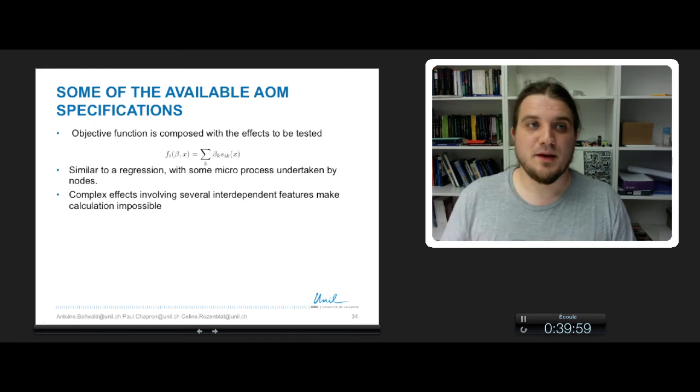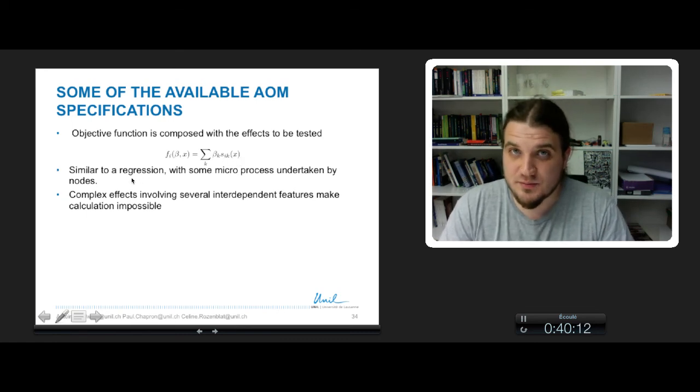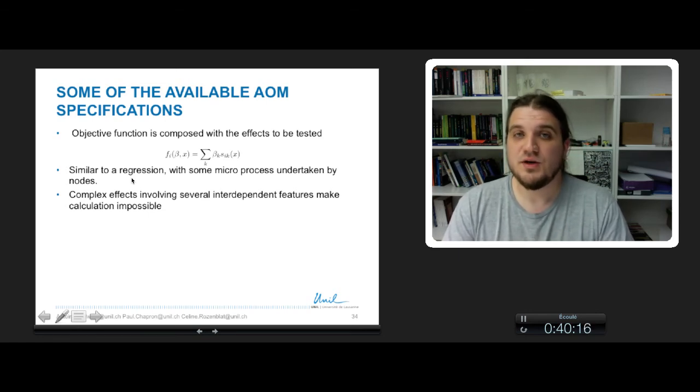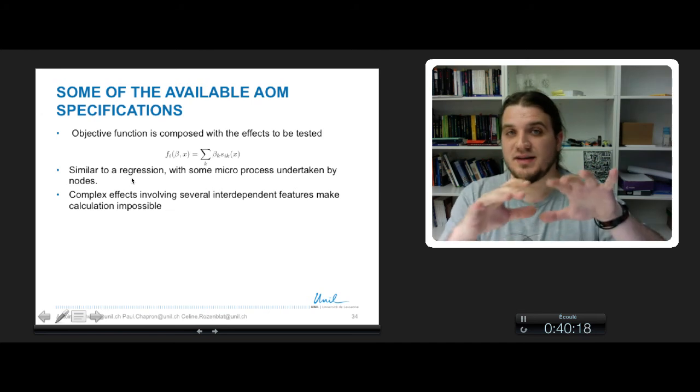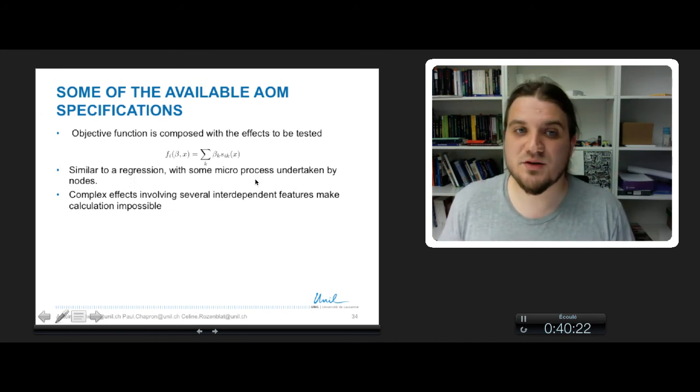You obtain the objective function by making the weighted sum of every chosen effect, SIK. It's in fact very similar to a regression, but instead of a log linear or linear regression,